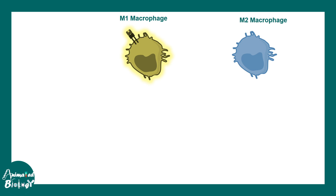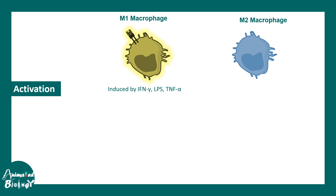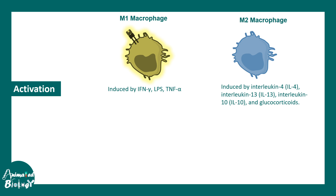To recap: M1 and M2 macrophages differ in their activation. M1 macrophages are activated via the classical pathway, induced by interferon-gamma, lipopolysaccharide from bacterial membranes, and TNF-alpha. M2 macrophages are activated by interleukin-4, IL-13, and interleukin-10.